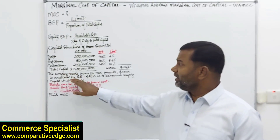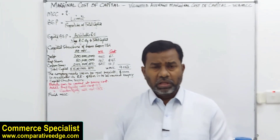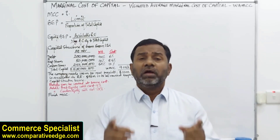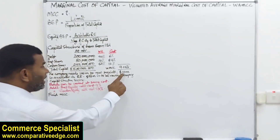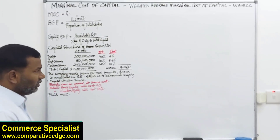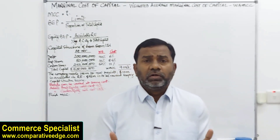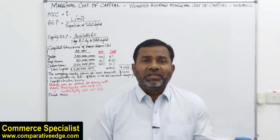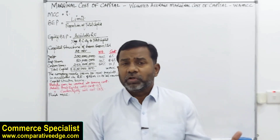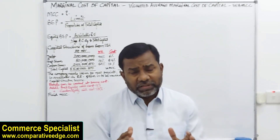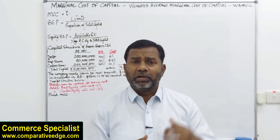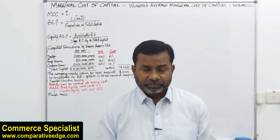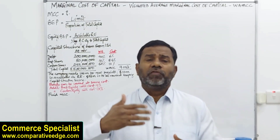The scenario is: the company needs an additional 100 million for new projects. At the moment, 10 million is available in retained earnings. So the additional funds to be raised — either through debt, preference shares, or common shares — is 90 million. The further assumption is that even if the company raises new capital of 90 million, the capital structure should remain the same, as it is considered optimal.